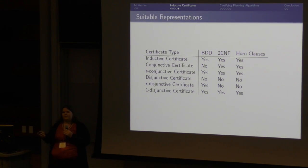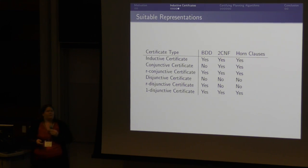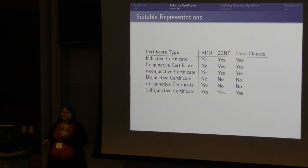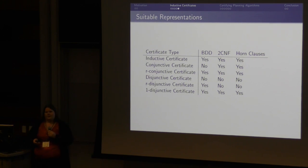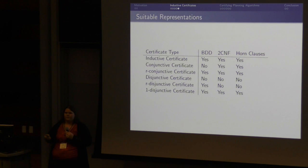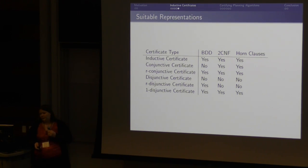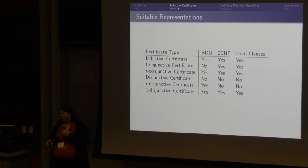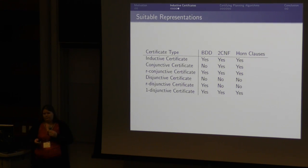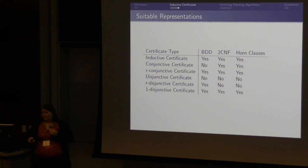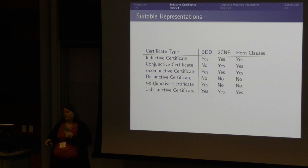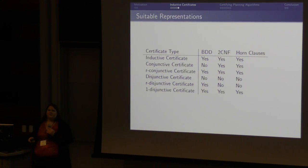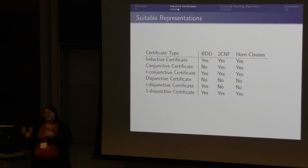I will just show some results for which types of certificates and representations are suitable. If we have an inductive certificate — just one formula describing the entire state set — all of our formalisms work very well. For a conjunctive certificate, BDDs don't work that well because they don't cover unbounded conjunction. Two CNF and Horn clauses still work, but then you can basically just build an inductive certificate because the conjunction of two Horn clauses is just a Horn clause. For R-conjunctive certificates, all formalisms are again usable because bounded conjunction is something you can do with BDDs. For disjunctive certificates, none of our formalisms can support them efficiently. For R-disjunctive, BDDs work again due to the same argument with bounded disjunction. And if we have a one-disjunctive certificate, we can again use all representations.